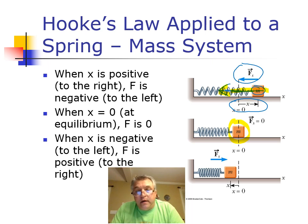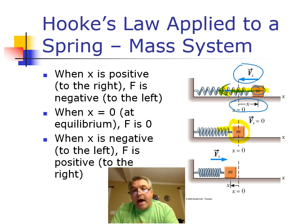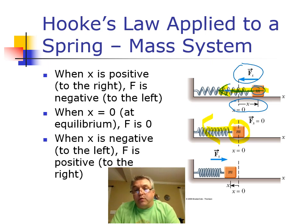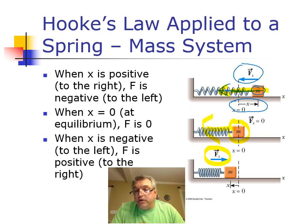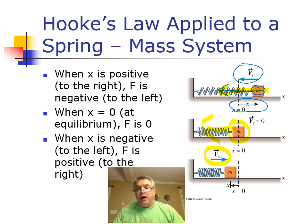Because the mass is moving at equilibrium, it has momentum — momentum equals mass times velocity — and that momentum carries the mass past the equilibrium position. Now it has a displacement to the left, and the restoring force acts toward the right. When it reaches maximum displacement, the force pushes it back toward equilibrium again, and the mass overshoots. That's why if you stretch something on a spring and let it go, the spring will bounce back and forth until it settles down and comes to rest.